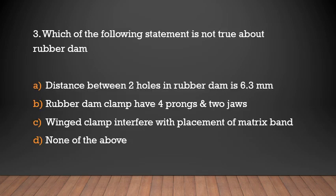Which of the following statement is not true about rubber dam? Distance between two holes in rubber dam is 6.3mm. Rubber dam clamp have four prongs and two jaws. Winged clamp interfere with placement of matrix band. None of the above.